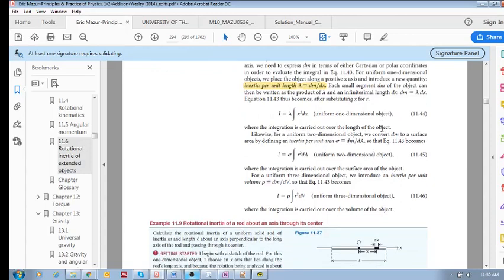So we introduce something called the inertia per unit length. This is specifically for a uniform one-dimensional object. For every change in dx, if you imagine a single rod along the x-axis with a differential length dx,